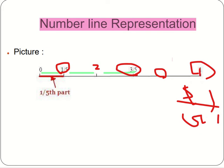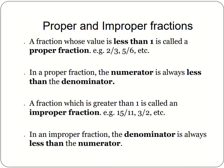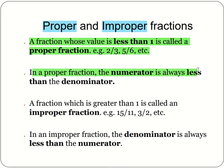Now we will learn about proper and improper fractions. A fraction whose value is less than 1 is called a proper fraction, for example 2 by 3, 5 by 6, etc. In a proper fraction, the numerator is always less than the denominator. A fraction which is greater than 1 is called an improper fraction. For example, 15 by 11, 3 by 2, 9 by 7 are improper fractions.